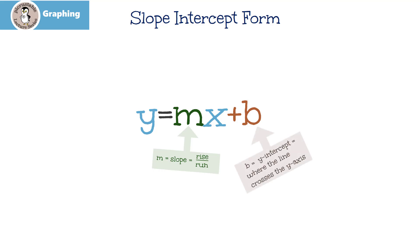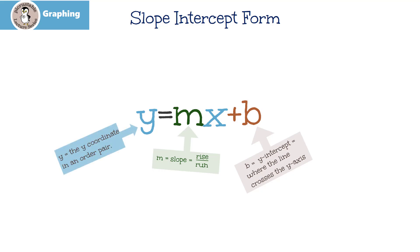b is the y-intercept — that's where the line crosses the y-axis. Remember, the y-axis is the vertical one. A lot of times students ask me, well, what about the y and the x? The y is the y-coordinate in an ordered pair, and the x is the x-coordinate in the same ordered pair.